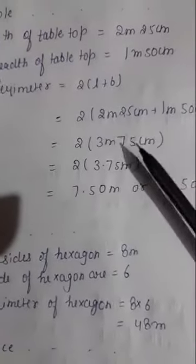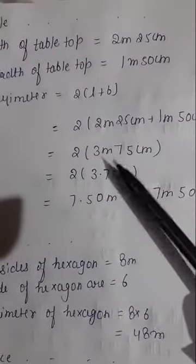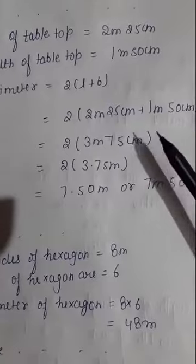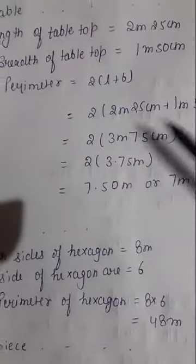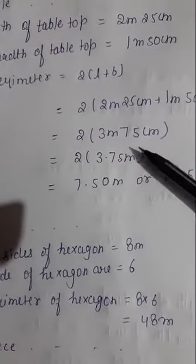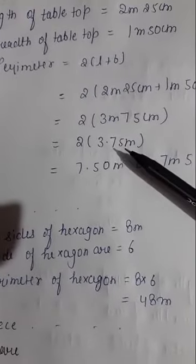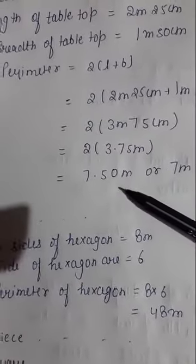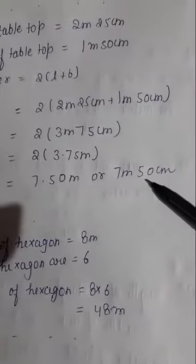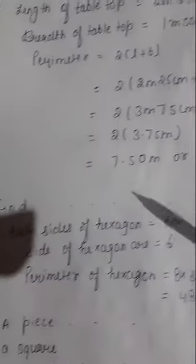1 meter 50 centimeter. Then we add 2 plus 1 is 3, and 25 plus 50 is 75. We write like this: 3.75 meters. 2 into 3.75 equals 7.50 meters, or we can write this as 7 meter 50 centimeter.